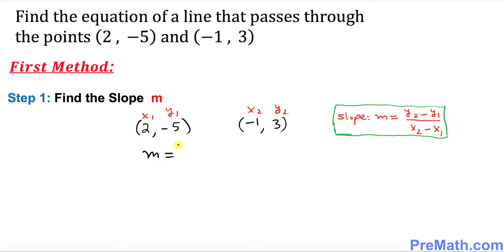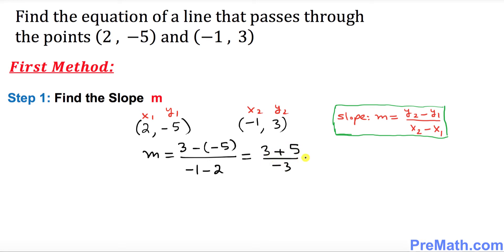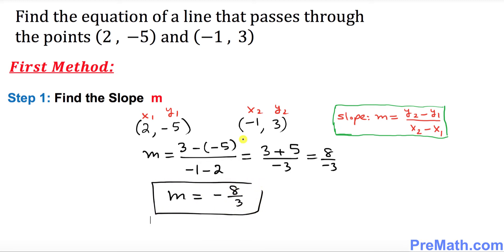Our slope is going to be y2, which is 3, minus y1, which is -5, divided by x2, which is -1, minus x1, which is 2. That becomes 3 plus 5 (since negative and negative become positive) divided by -3. So 8 over -3 — our slope turns out to be negative 8 over 3.